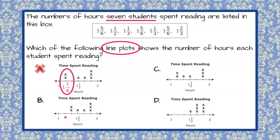Looking at B, there are no data points on one and one-sixth, so we could consider this to be correct. Choice C also has two data points on one and one-sixth, so we can rule out line plot C. And then D doesn't have any data on the one and one-sixth, so we're good.